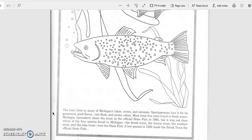Michigan lawmakers chose the trout as the official state fish in 1965, but it was not clear which of the four species found in Michigan - the brook trout, the brown trout, the rainbow trout, and the lake trout - was the state fish. A law passed in 1988 made the brook trout the official state fish. So a little fun fact, there's actually four different kinds of trout in Michigan.